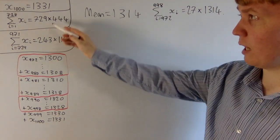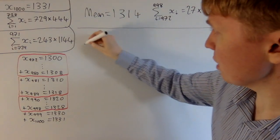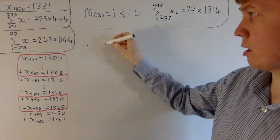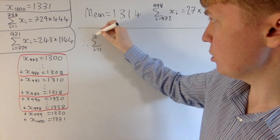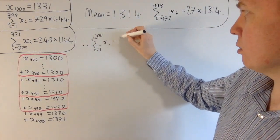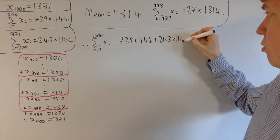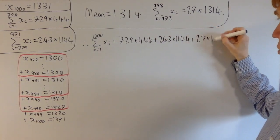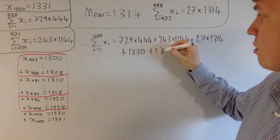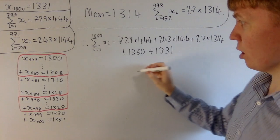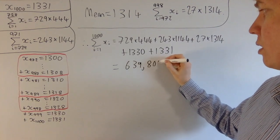Then all we need to do now to find the total sum is we add all of these different pieces. We also add 1,330, we add 1,331. So let's just write this out. And I'll write it in a way as well so that we can kind of generalize this problem because there is some really beautiful structure there as well underneath. So the sum from i equals 1 up to 1,000 of our xᵢ, this is equal to 729 times 444 plus 243 times 1,144 plus 27 times 1,314 and also plus 1,330 plus 1,331. We'll just add these remaining two terms. And if you put this into your calculator then, we get 639,807 as our final answer.